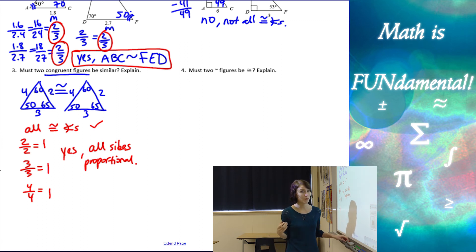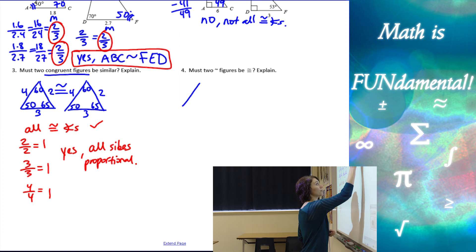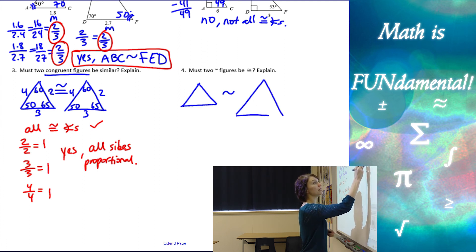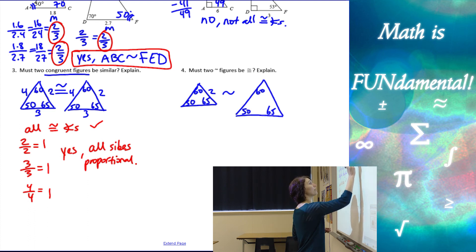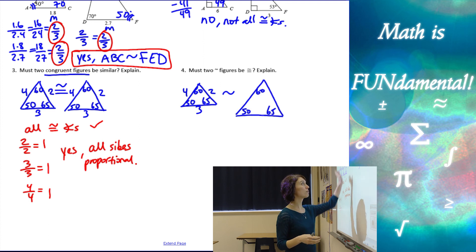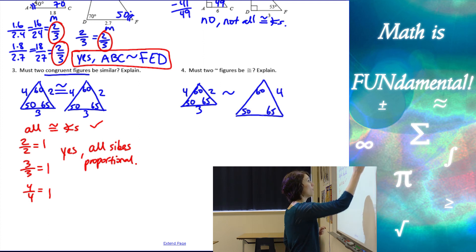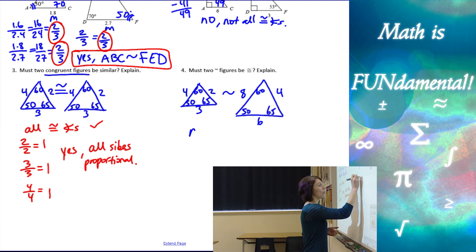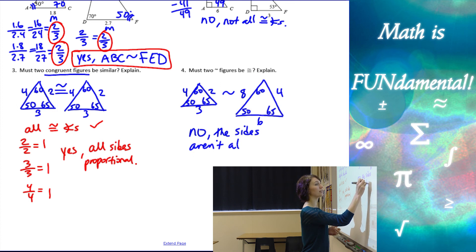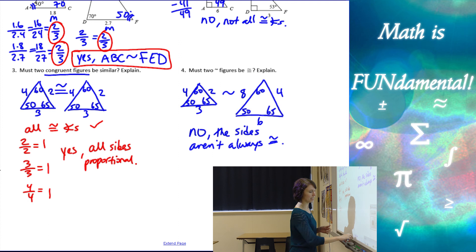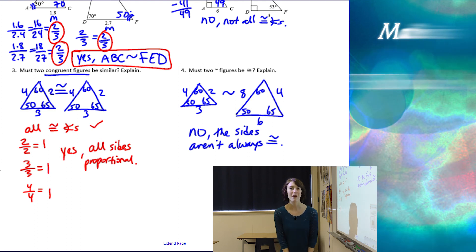Must two similar figures be congruent? Similar figures have the same angles — say 50, 60, and 65 — but they don't have to be the same size. If one has sides 2, 3, and 4 and we multiply by a scale factor of 2, we get 4, 6, and 8. Those sides are proportional but not congruent, so no — two similar figures do not have to be congruent. That concludes our lesson. Thank you for watching, and remember, math is fundamental!